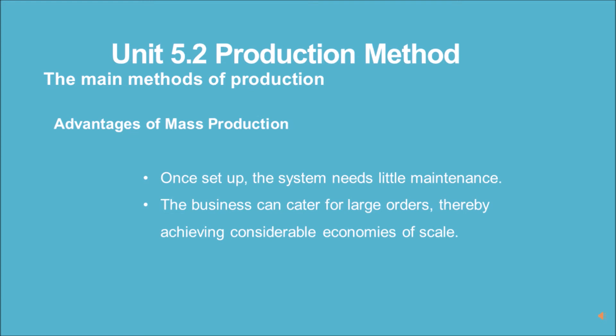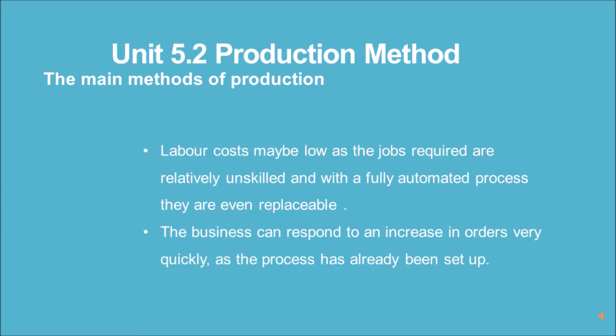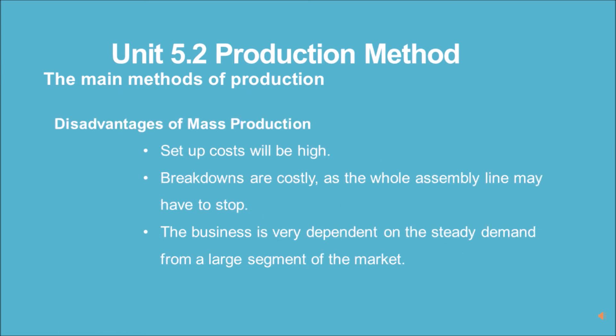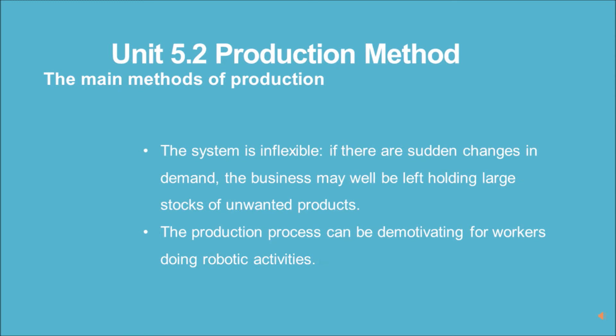Advantages of mass production: once set up, the system needs little maintenance. The business can cater for large orders, thereby achieving considerable economies of scale. Labor costs may be low as the jobs required are relatively unskilled, and with a fully automated process they are even replaceable. The business can respond to an increase in orders very quickly as the process has already been set up.